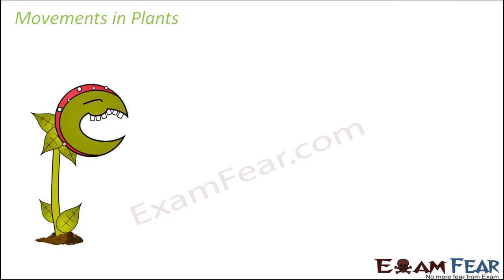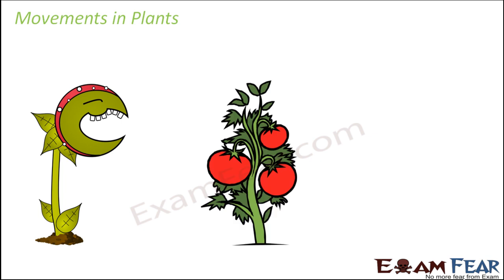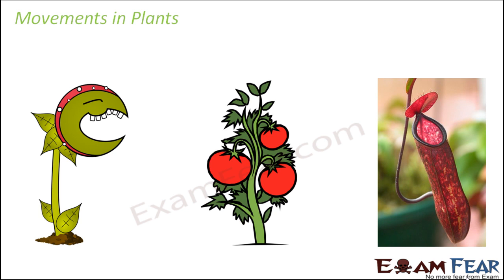In a similar way, plants also show movements. They might not move from one place to another like animals, but when you look at the parts of the plants, they do show movement. For example, insectivorous plants — the plants which feed on insects — like the pitcher plant. When an insect comes near the plant, the lid of the plant tends to close and the insect gets captured inside. That's how the plant eats the insect. So this movement is shown by plants.